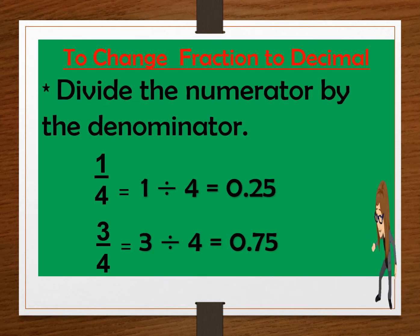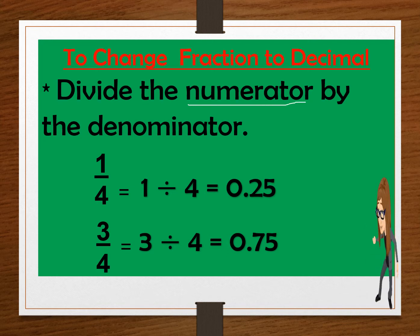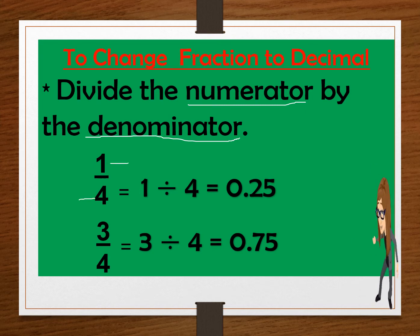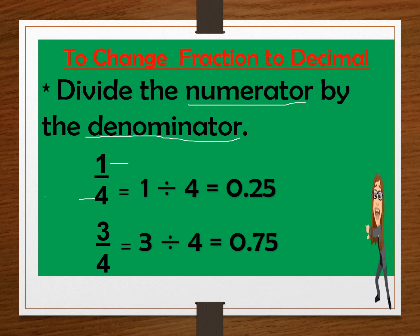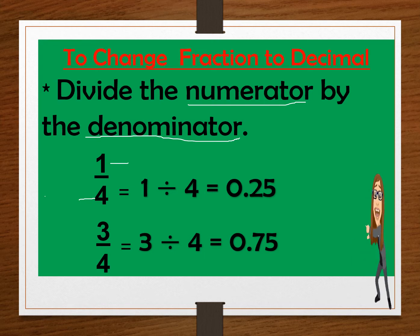To change fraction to decimal, we need to divide the numerator by the denominator. Example: 1 fourth. 1 is the numerator and 4 is the denominator. So we divide 1 divided by 4, that is 0.25 or 25 hundredths.